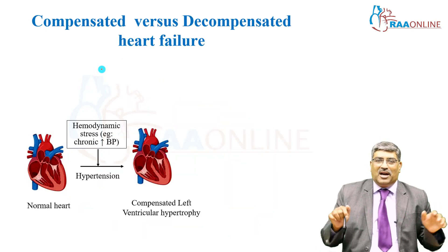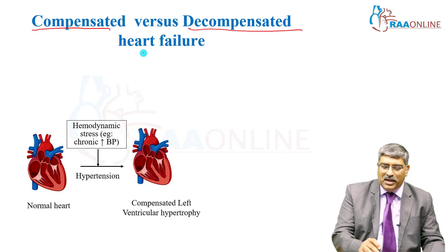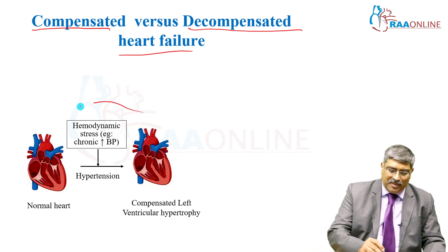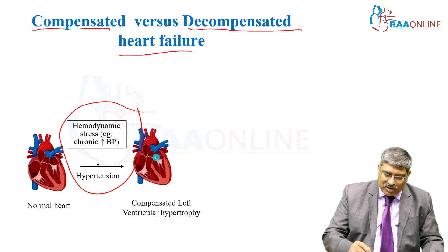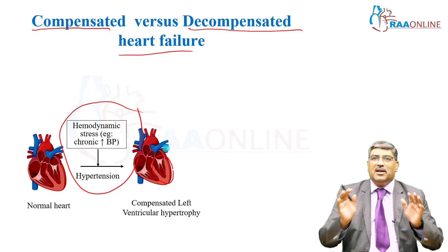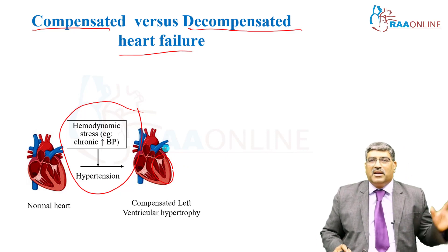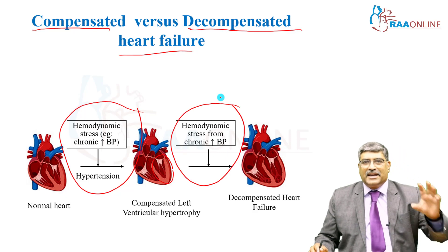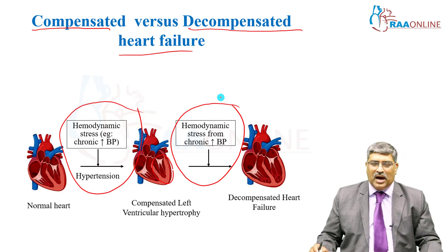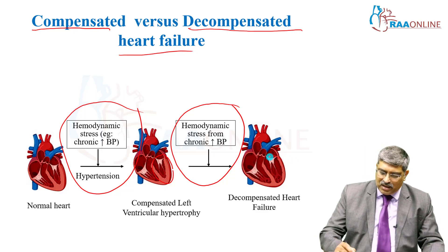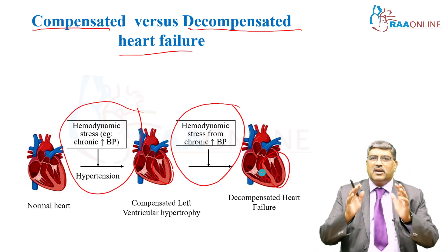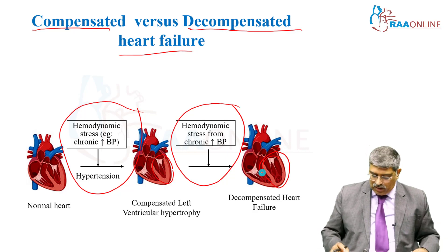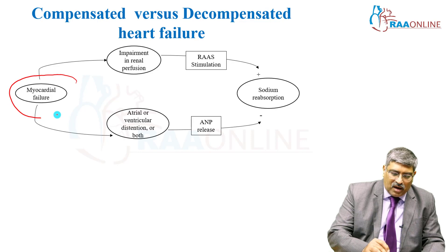Another important concept in heart failure is whether the patient is compensated or decompensated. When a chronic stress is placed on the heart — for example, hypertension — the heart undergoes left ventricular hypertrophy and compensates to maintain cardiac output. But if the stress continues, such as uncontrolled blood pressure or added tachycardia, the heart decompensates. The heart becomes dilated and enlarged, leading to a drastic fall in cardiac output and heart failure.